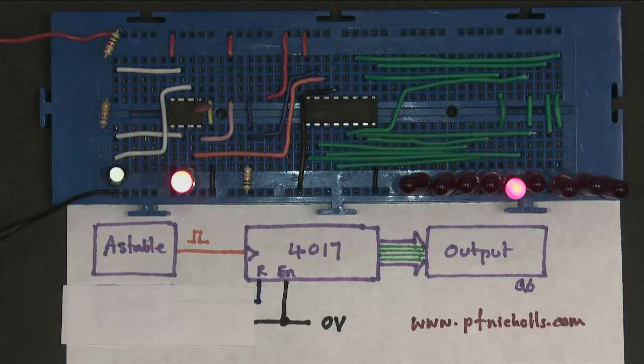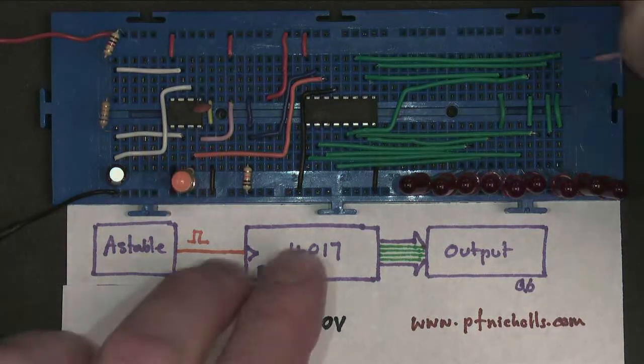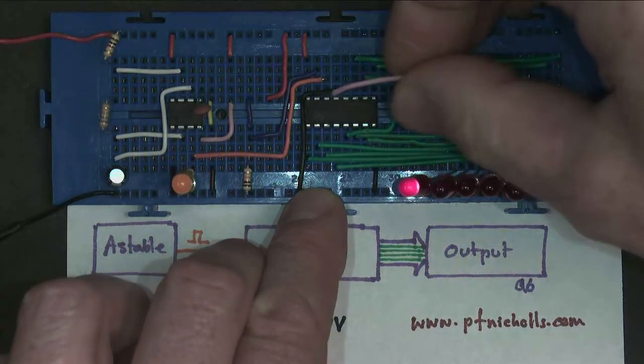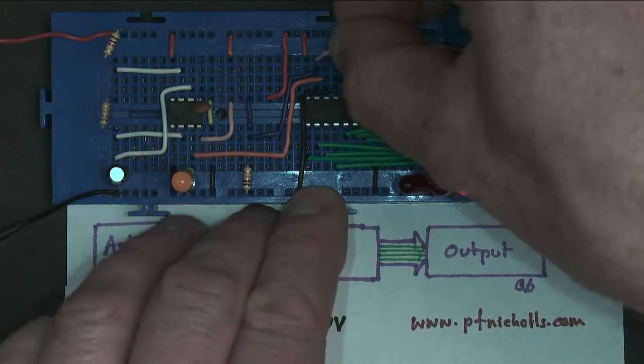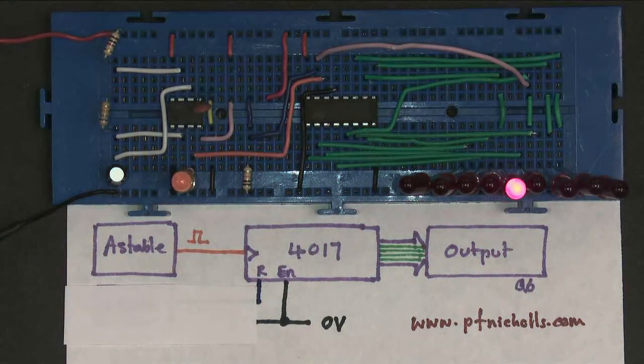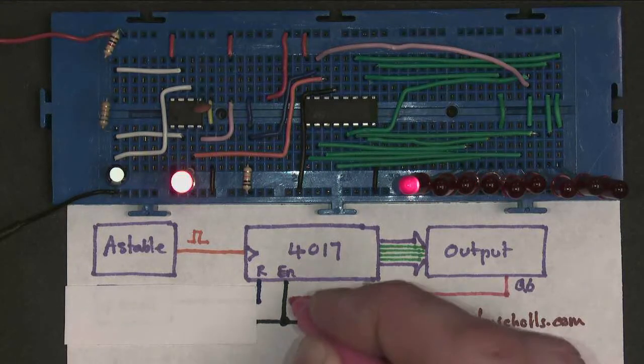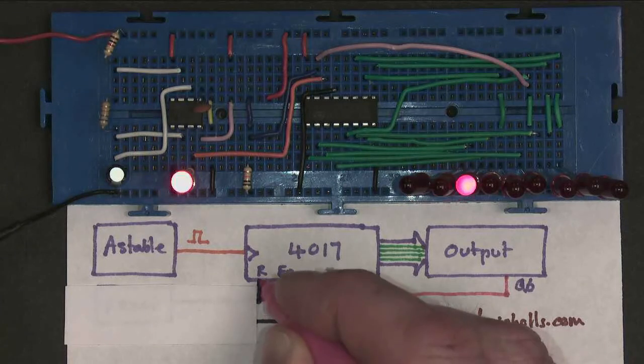I'm going to take the output that was driving Q6, which is this one just here, and connect it into my vacant reset pin. So what I've done there is I've taken a pink wire from Q6 and connected it to the reset.